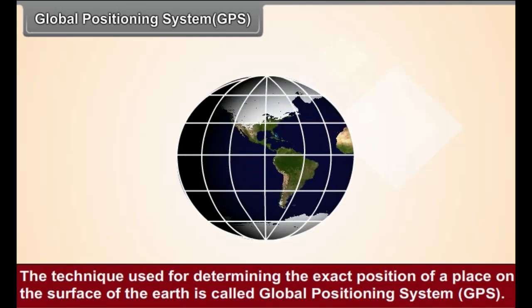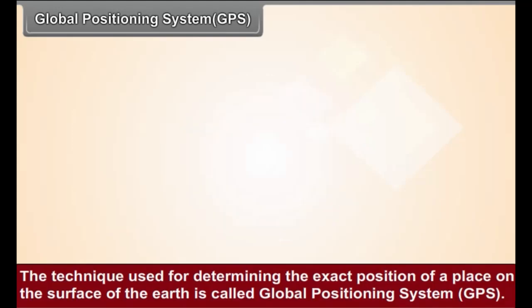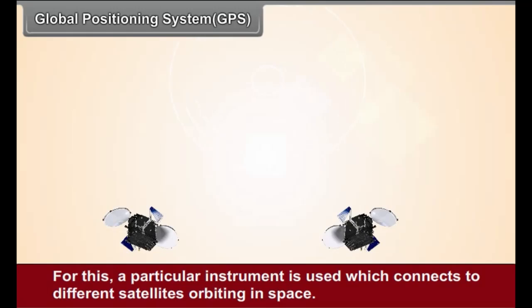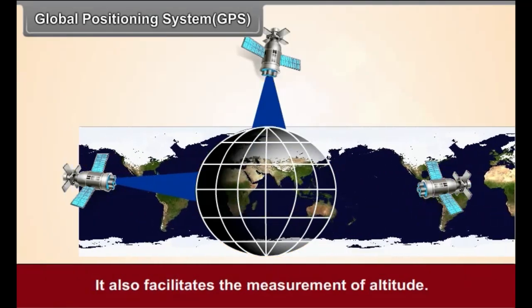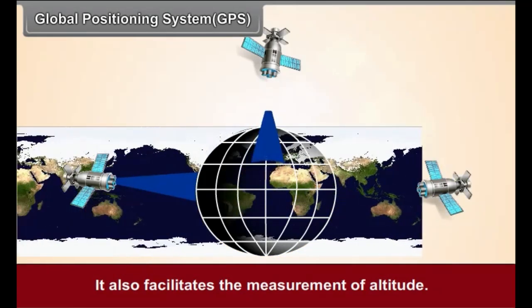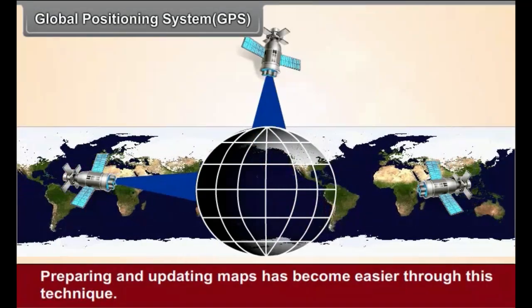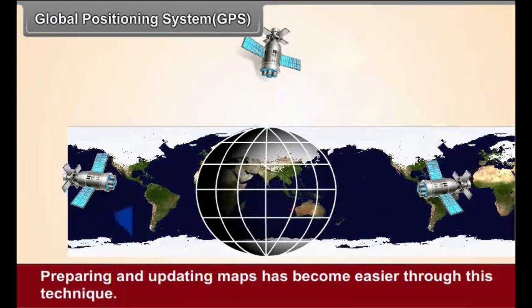Global Positioning System: The technique used for determining the exact position of a place on the surface of Earth is called Global Positioning System (GPS). A particular instrument is used which connects to different satellites orbiting in space. Through this, the position of a place is fixed with reference to latitudes and longitudes. It also facilitates the measurement of altitude. Preparing and updating maps has become easier through this technique.